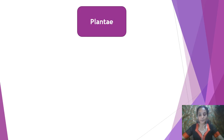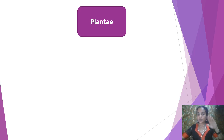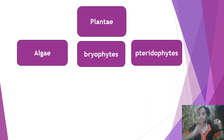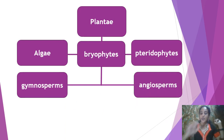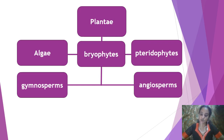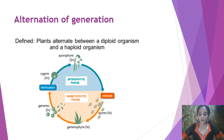Now let's see the classification of plants according to Whittaker. Kingdom Plantae is divided into: algae, then bryophyte, then pteridophyte, then gymnosperm, and angiosperm. The detailed part will be learned in the next chapter on the plant kingdom. So these are the five groups coming under Plantae: algae, bryophyte, pteridophyte, gymnosperm, and angiosperm.